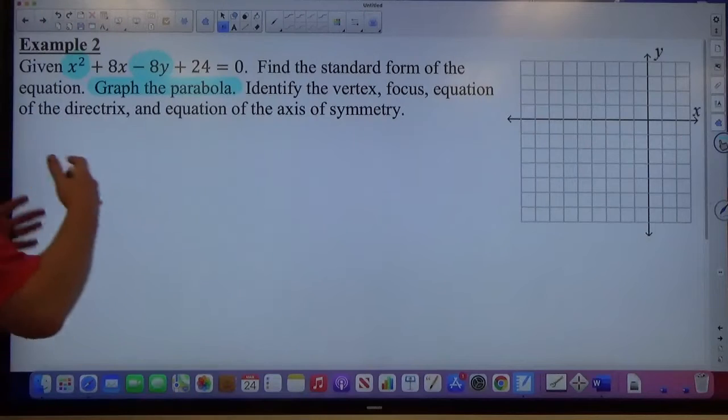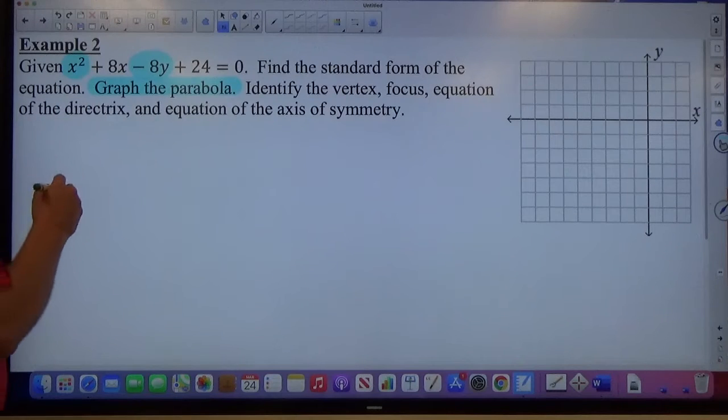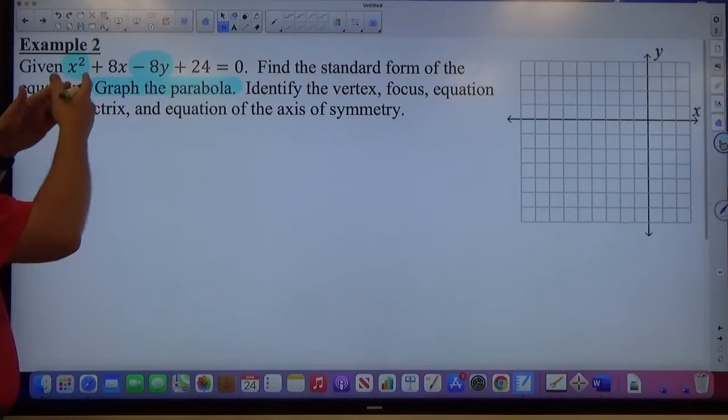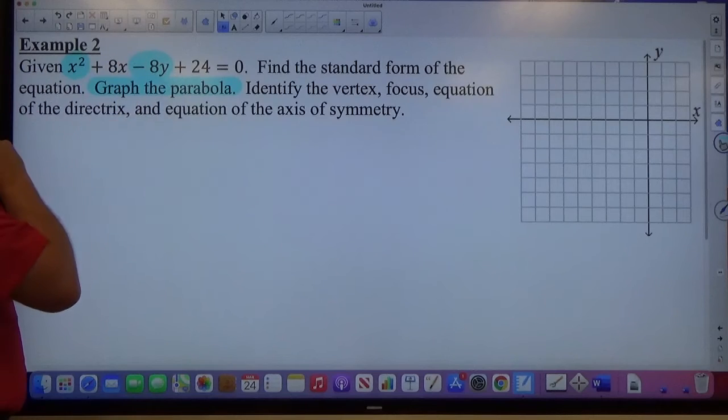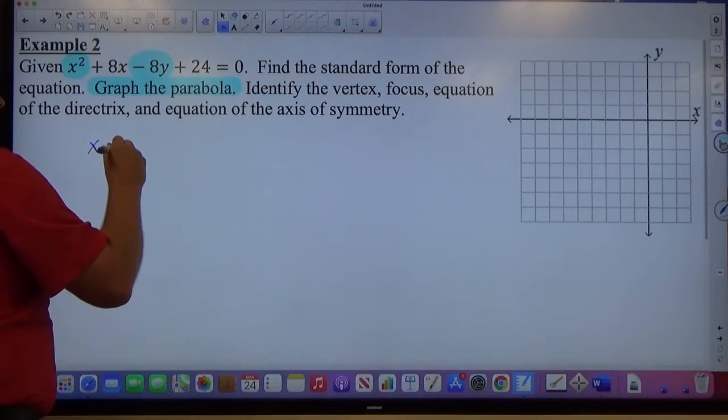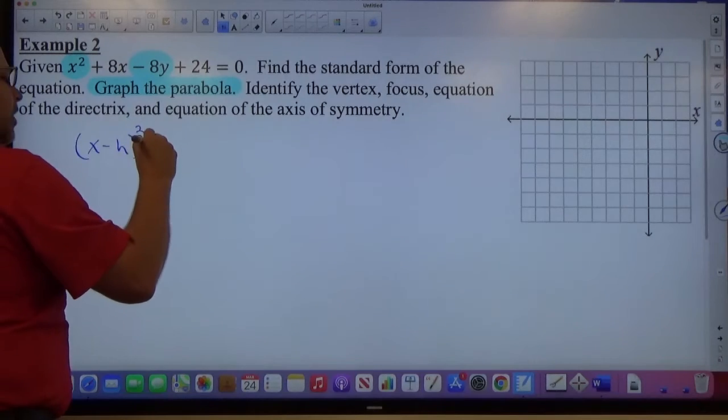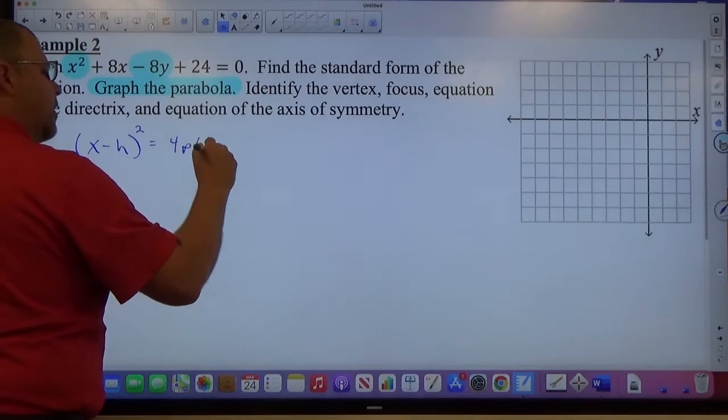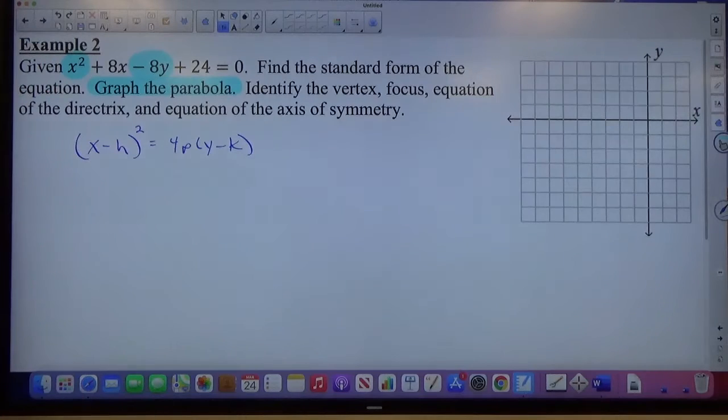Once again, it says find the standard form. I want to see what standard form looks like. It's going to be about me using algebra to transform this into standard form. So it looks like this: (x minus h) squared equals 4p(y minus k). That's what I'm trying to make this thing look like, and currently it does not look like that.